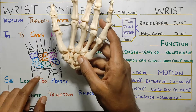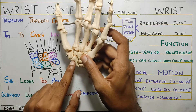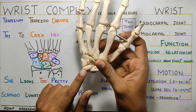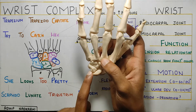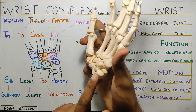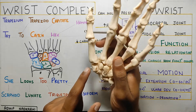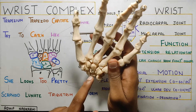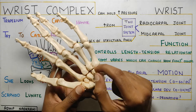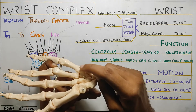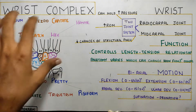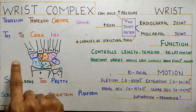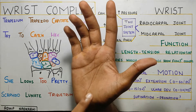Looking at the model, here are the bones: scaphoid, then lunate, then triquetrum, then pisiform. Then comes the trapezium, then the trapezoid, then the biggest one is the capitate, and after capitate comes the hamate — which has a hook called the hook of hamate. You can easily remember all these with the mnemonic, and remember it starts from the thumb side.